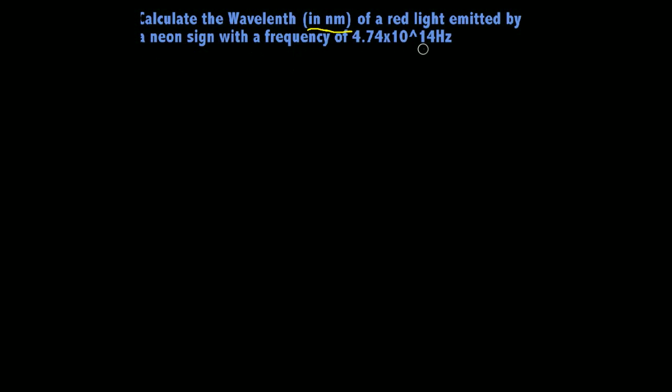Just to catch everyone up, the formula for wavelength and frequency is V, which stands for frequency, equals the speed of light represented by C over wavelength, which is that little lambda I think it's called, that little upside down Y there.